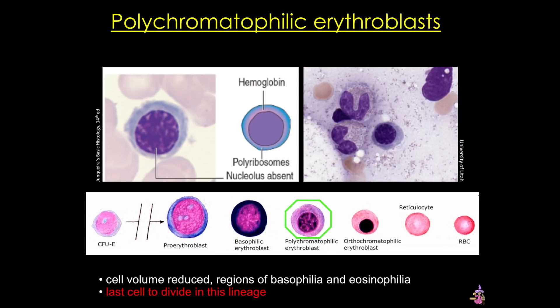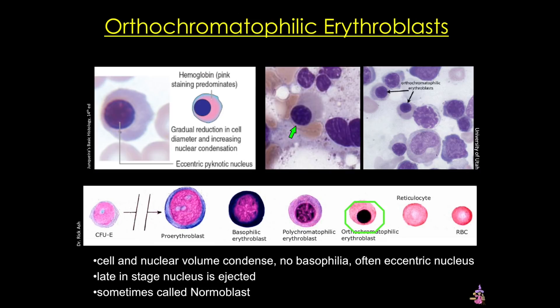As we move further in time we see the polychromatophilic erythroblast, which continues to get smaller. Its nucleus is moving more eccentric or off-center. This cell's cytoplasm can range from a pale blue to a pale gray or even slightly pink. It's the last cell to be able to divide in this lineage. The last stage not normally found in the blood is the orthochromatophilic erythroblast. This cell has an eccentric nucleus and a colorless, pale pink or gray cytoplasm. Late in this stage the nucleus is ejected, so if these cells are seen in the peripheral blood this can indicate early release of progenitors from the bone marrow and a possible pathology.